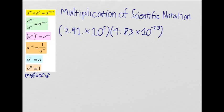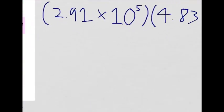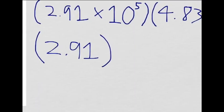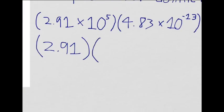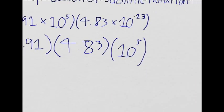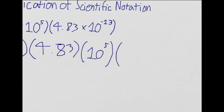The first thing I would do is separate everything. I would put the 2.91 and the 4.83 next to each other, and put the 10 to the 5th power and the 10 to the negative 13th power next to each other.